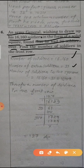Total number of soldiers is 16,160, number of extra soldiers 31. So number of soldiers in the square is we subtract 31 from 16,160, so 16,129 soldiers in the square. Therefore, number of soldiers in the front row means square root of 16,129.